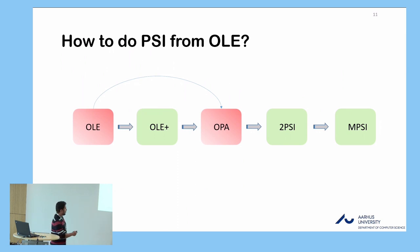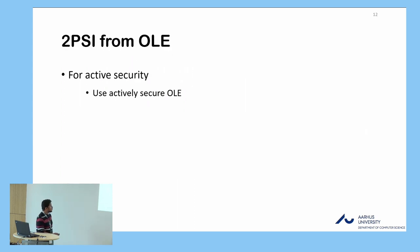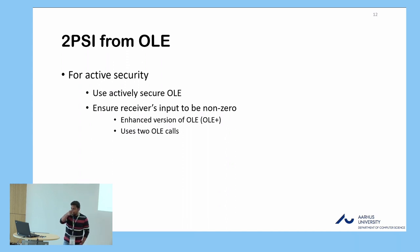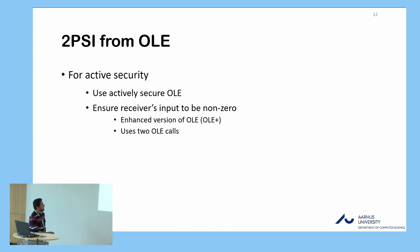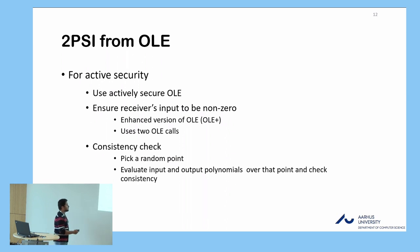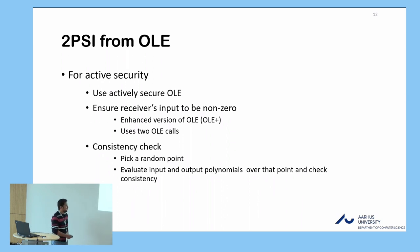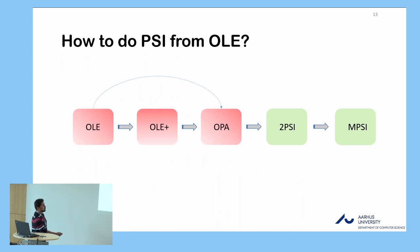We are done with the OPA functionality. For active security, we have to use actively secure OLE boxes instead of passively secure OLE. But that's not enough — we also need to ensure that the receiver cannot input a zero value to all OLE invocations, because otherwise the receiver could learn the sender's polynomial fully. So we define a functionality called OLE+ which handles this and requires only two OLE calls. At the end we need a consistency check: since we work with polynomials, we pick a random point and check the consistency of the input and output polynomials. That gives us the actively secure OPA protocol.